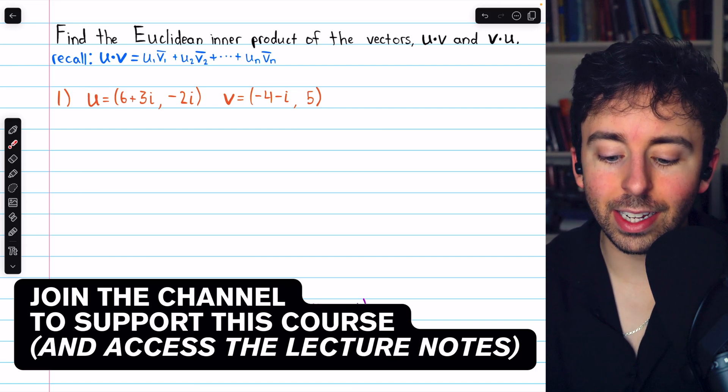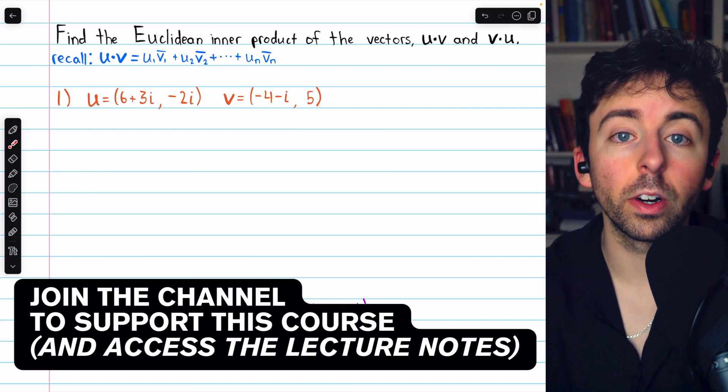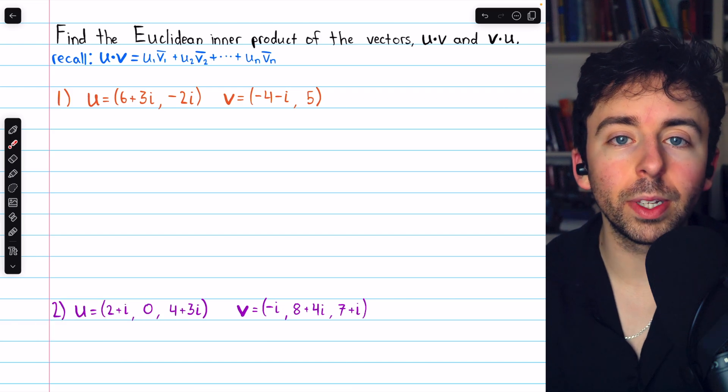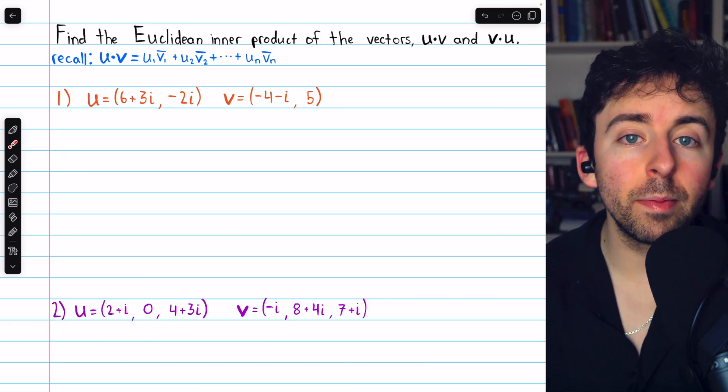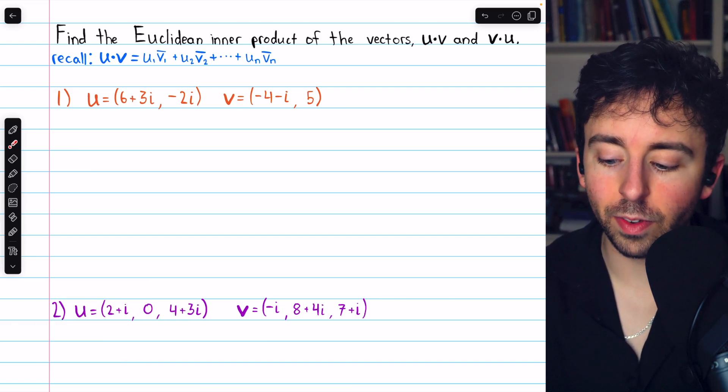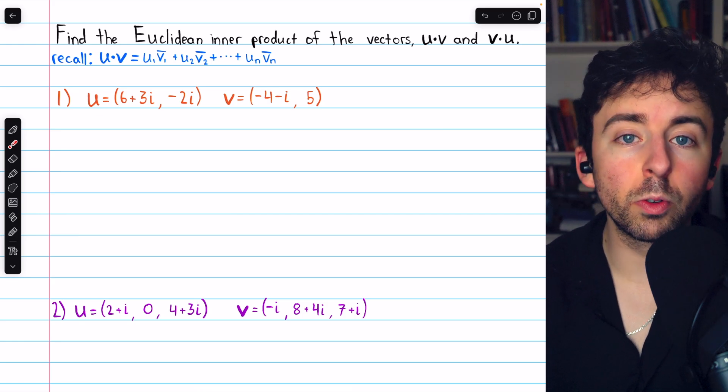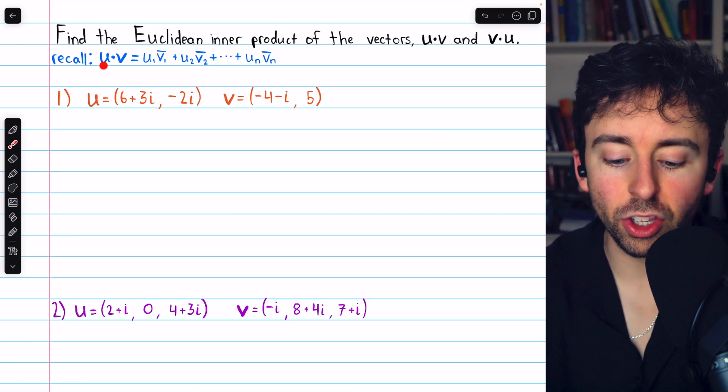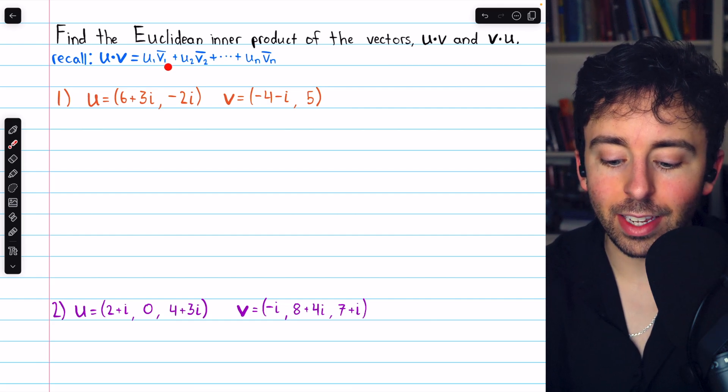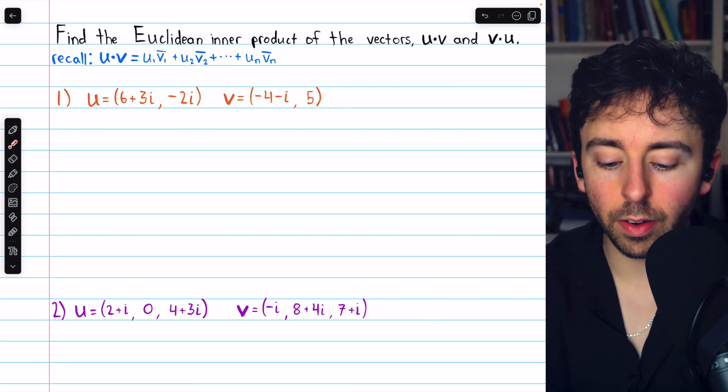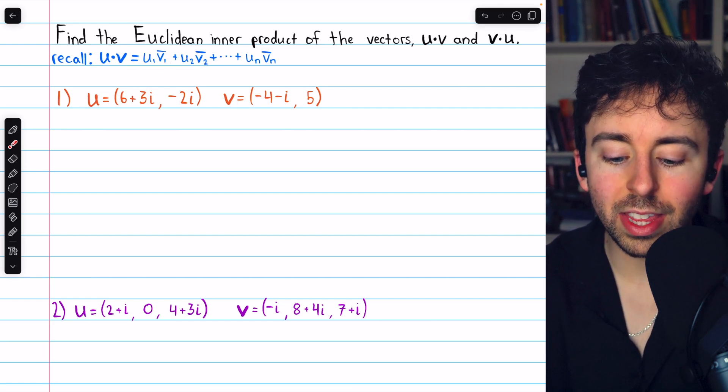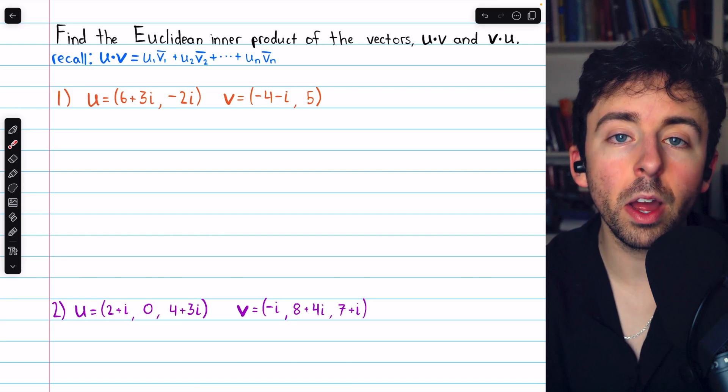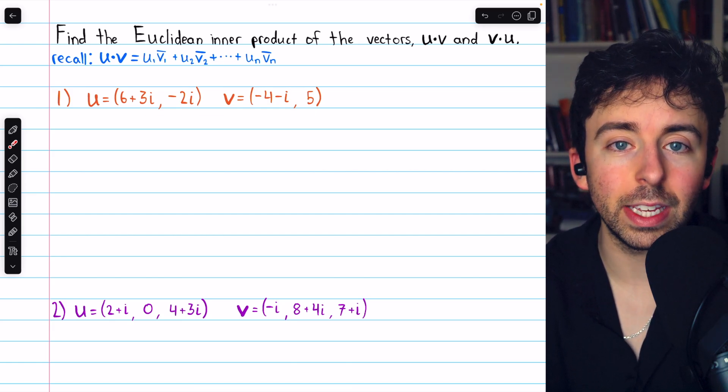Let's do two examples of finding the Euclidean inner product, or dot product, of two complex vectors u and v in both directions. So we'll do u dot v and v dot u. We introduced this in a previous video. I'll leave a link in the description. Recall that u dot v is the sum of the products of the components of u with the conjugates of the corresponding components of v.